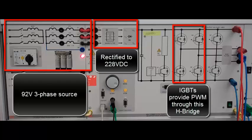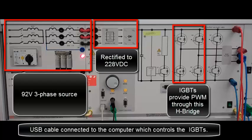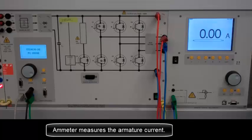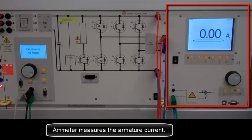The IGBTs provide pulse width modulation through this H-bridge. USB cable is connected to the computer, which controls the IGBTs. The ammeter measures the armature current.